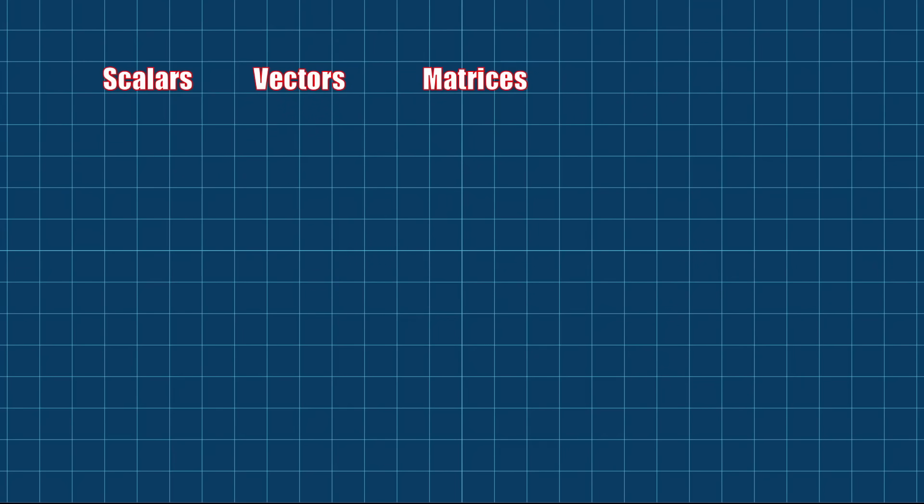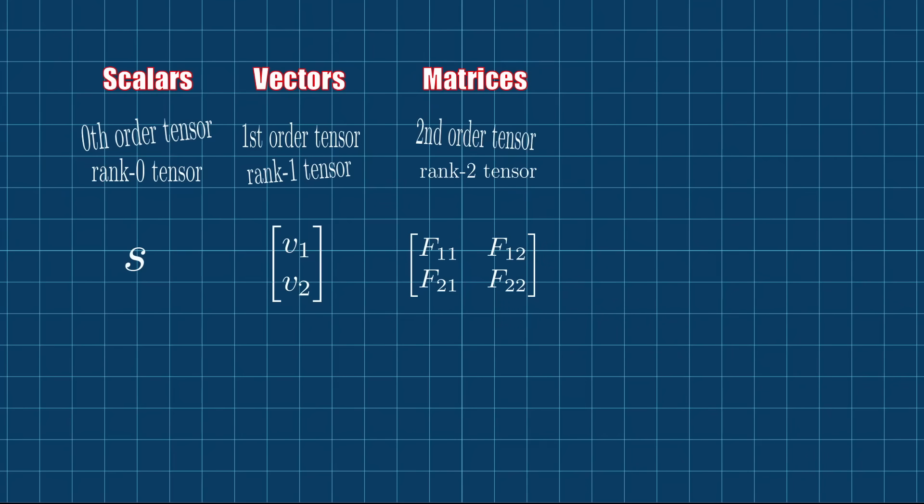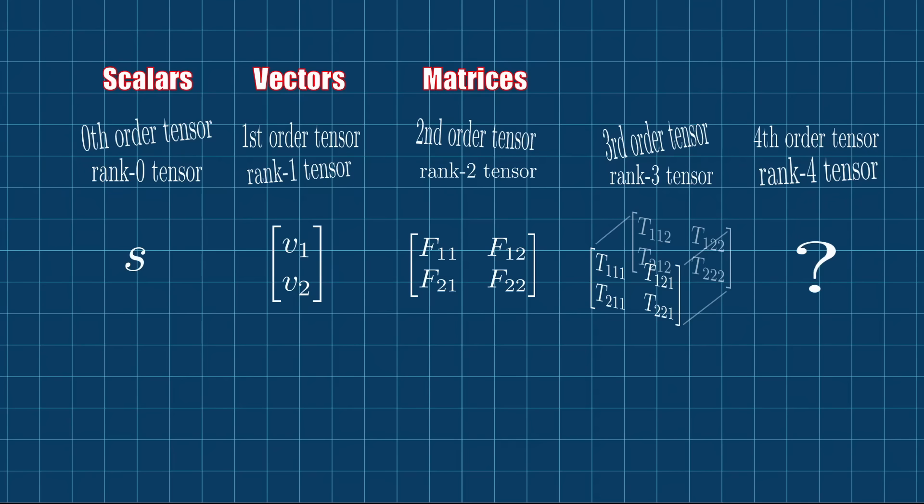A scalar is just a number. We also call this a zero-order tensor or rank zero tensor. A vector is an array that contains multiple numbers in a column, which we also call first-order tensor. And a matrix, which is an array of numbers with rows and columns, is called a second-order tensor. Now, we can extend this idea to third-order tensors by adding another layer of numbers to the array. As we add more and more layers, this becomes more and more difficult to visualize.